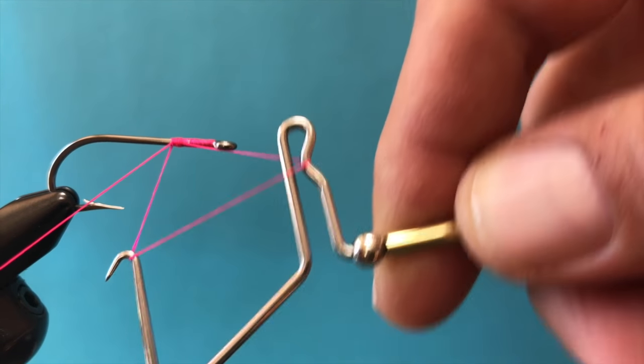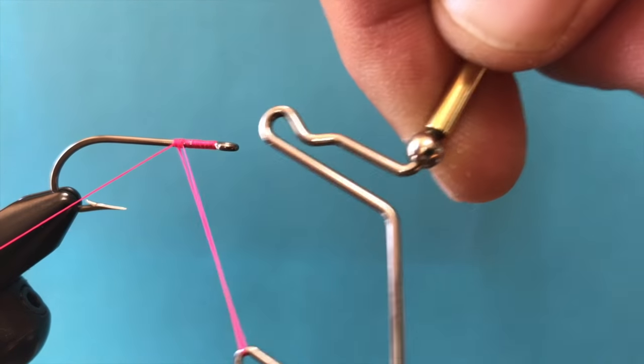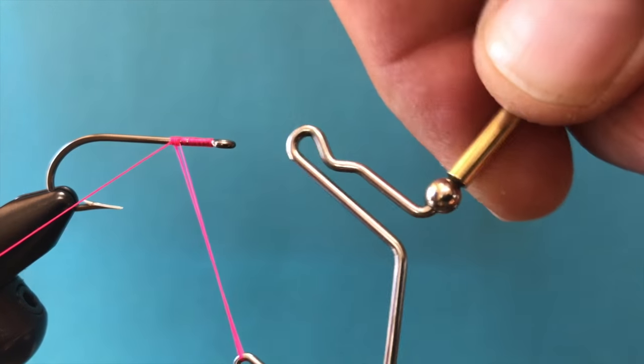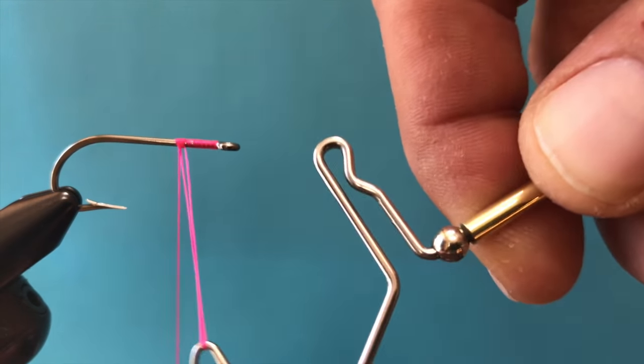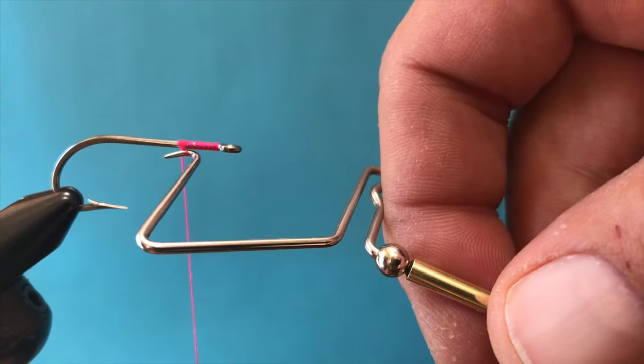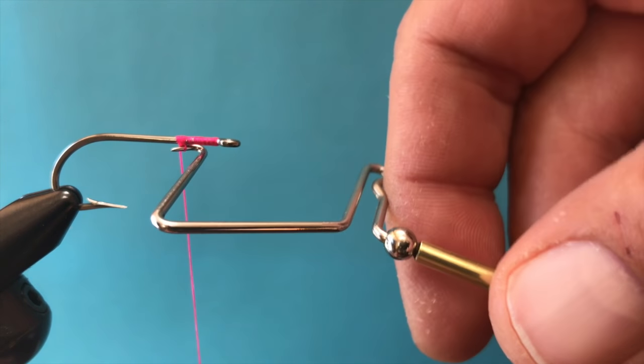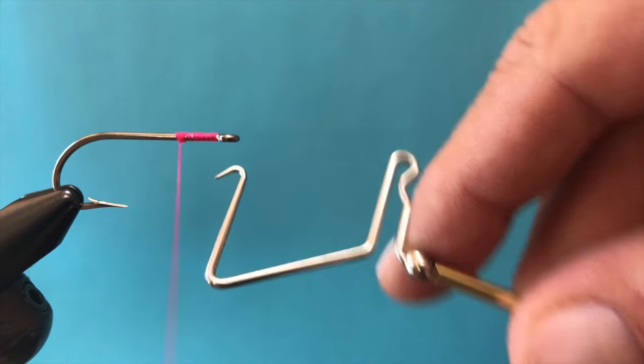Now, simply take the whip finisher and tilt it so that the thread slides right off this bottom hook. And then take this end of the thread, keeping tension on it, and pull it so that everything slides right up against the hook shank. And then simply back out the top hook. Let's do that again.